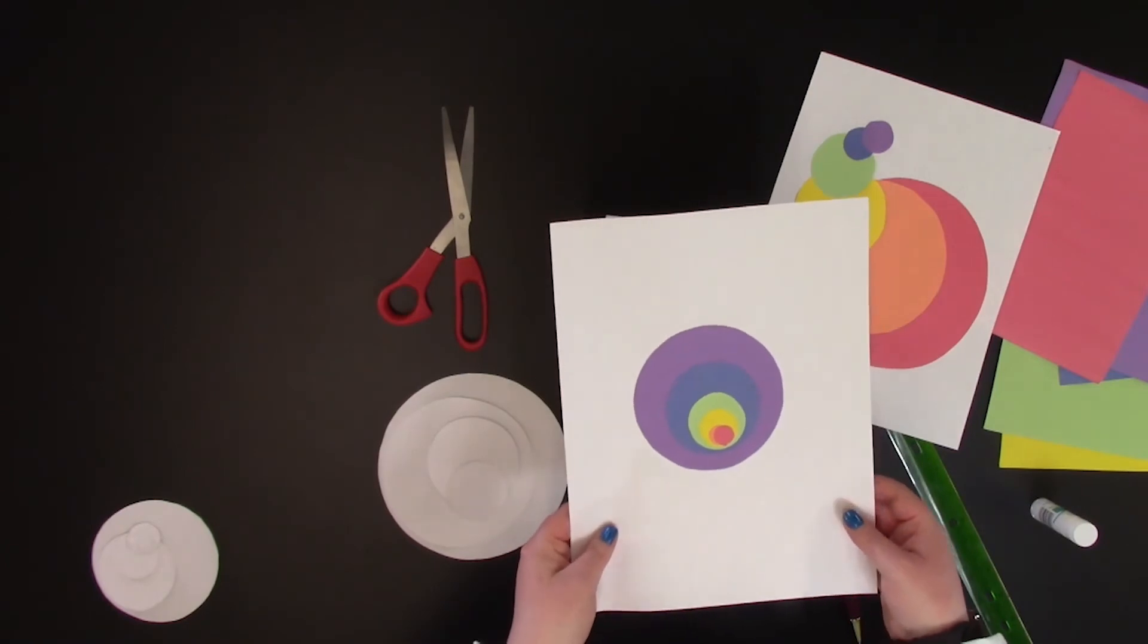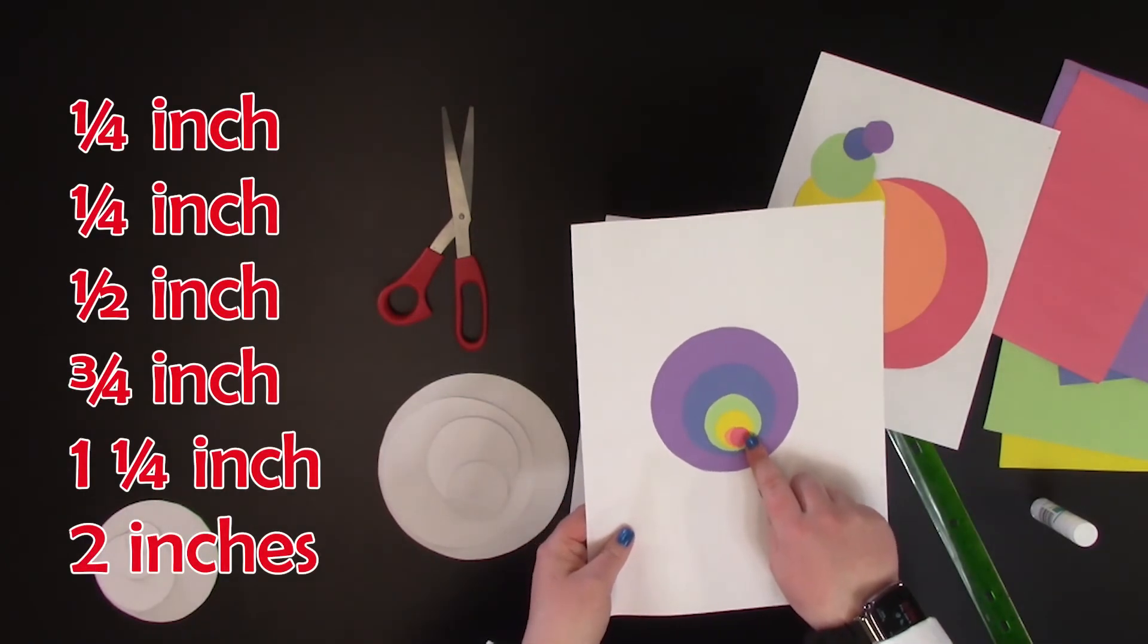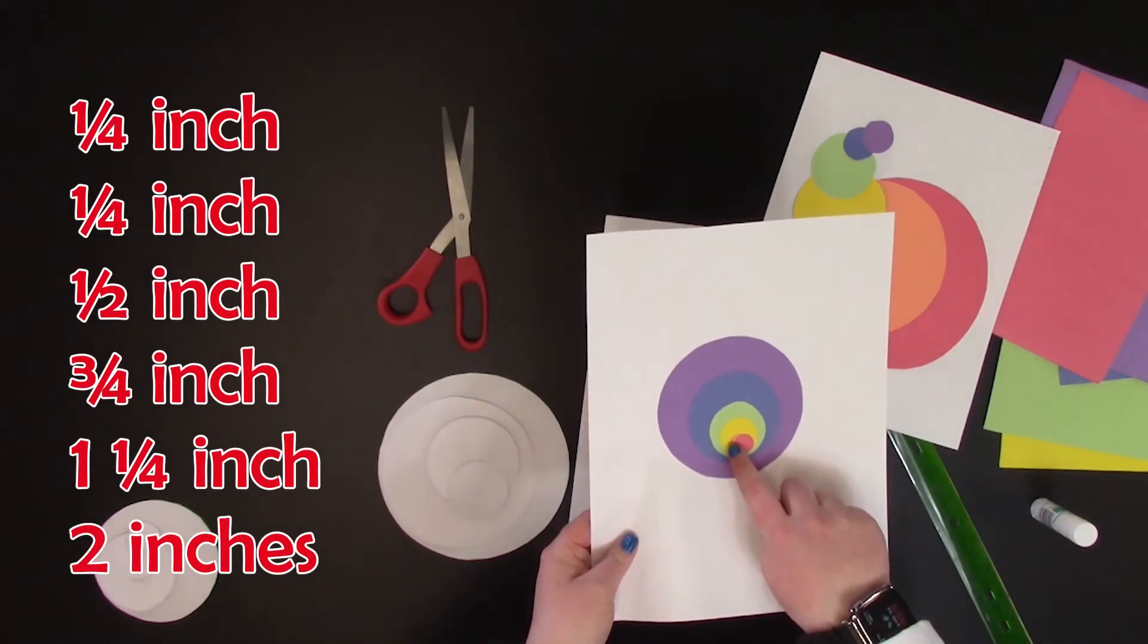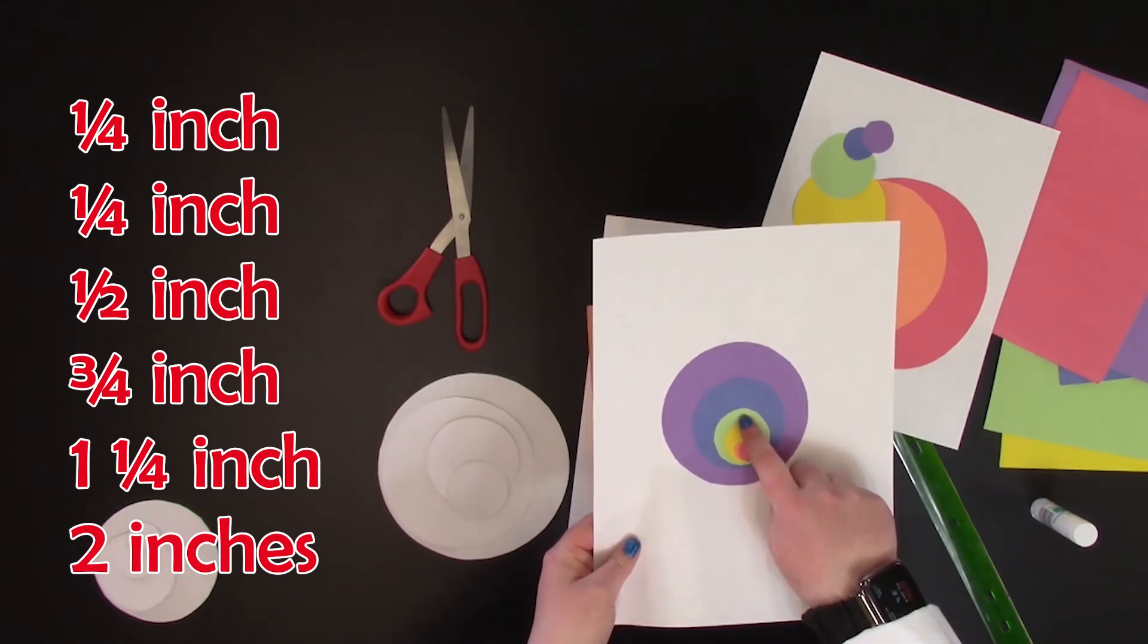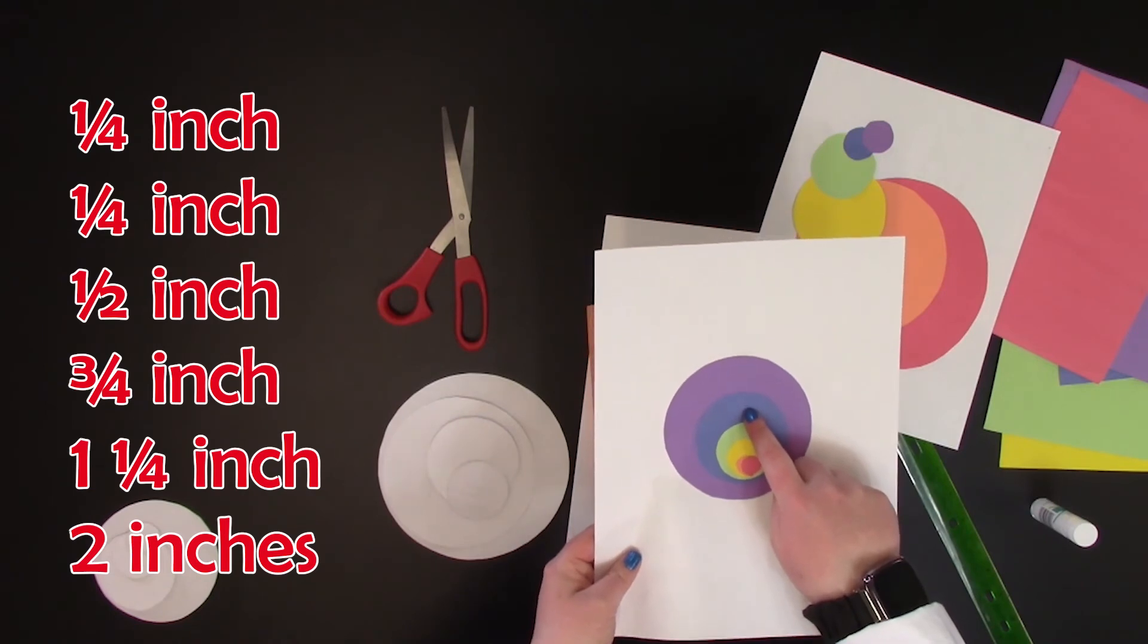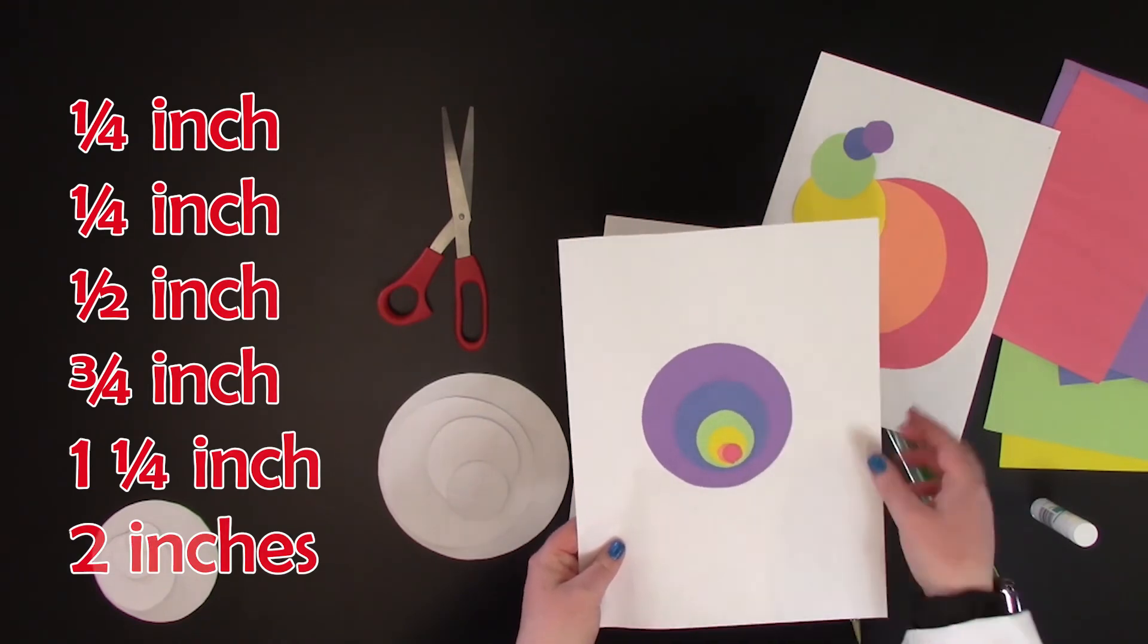So for a quarter-inch radius, we have a quarter-inch radius, quarter-inch radius, half-inch radius, three-quarters inch radius, one and a quarter inch radius, and two inches radius.